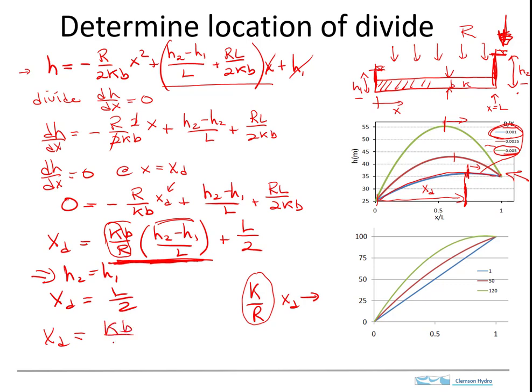So KB over R, if that equals L over 2, then the divide occurs out here. There's not really anything that prevents this from being even bigger than L over 2.